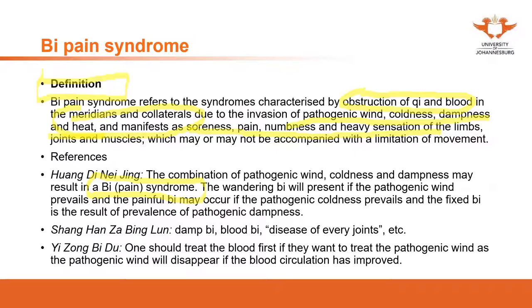So when you see the combination of pathogenic wind, coldness, and dampness may result in Bi syndrome. In treatment, we can relieve the wind, relieve the coldness, or relieve the dampness — depending on individuals. Huangdi Neijing further divided the Bi pain syndrome into different categories with different titles. Wandering Bi — moving around — presents when pathogenic wind prevails. Painful Bi — the main presentation of the symptom is pain; the patient presents with severe pain. Fixed Bi — the pain is not moving, compared with the wandering.